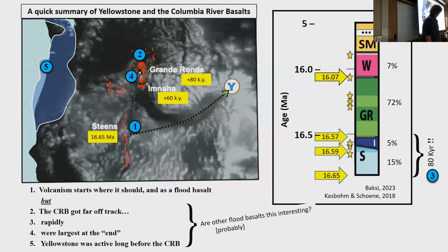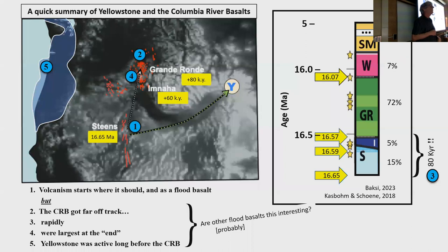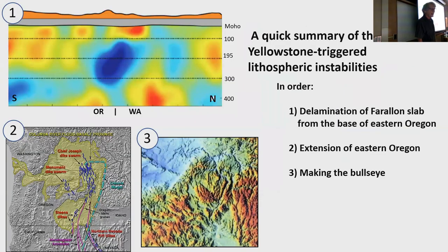Some things are very un-flood-basalt-like: there's rapid motion far north off-track, which isn't what you'd normally expect, and the volume gets bigger not at the beginning but as it propagates north. All those aspects seem surprising. I really wonder if other flood basalts around the world, if studied as thoroughly, would be equally as strange in various ways.